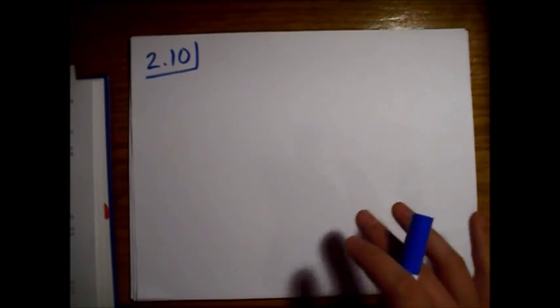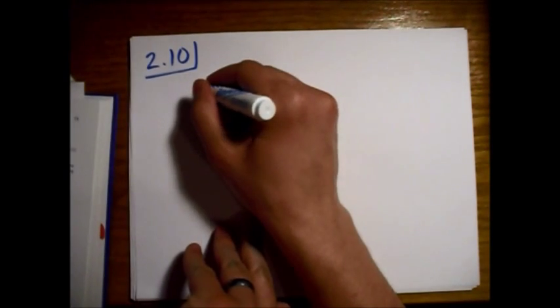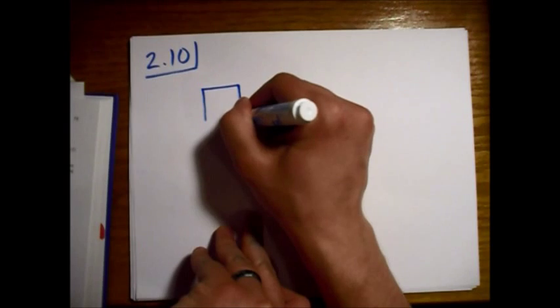Okay, so here's Griffith's E&M Problem 2.10. A charge Q sits at the corner of a cube.